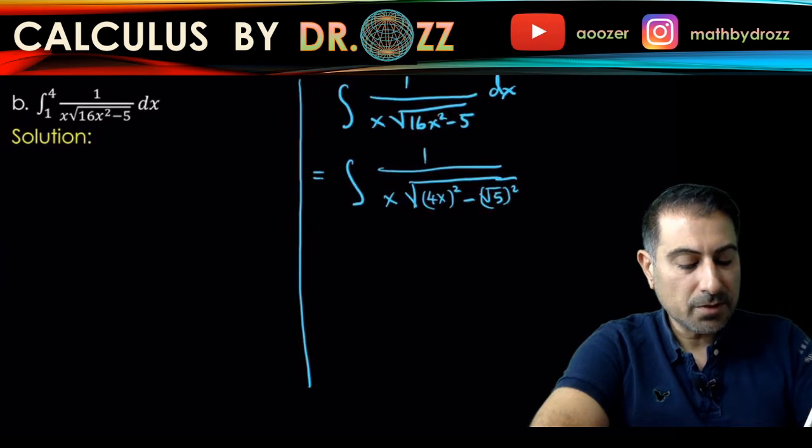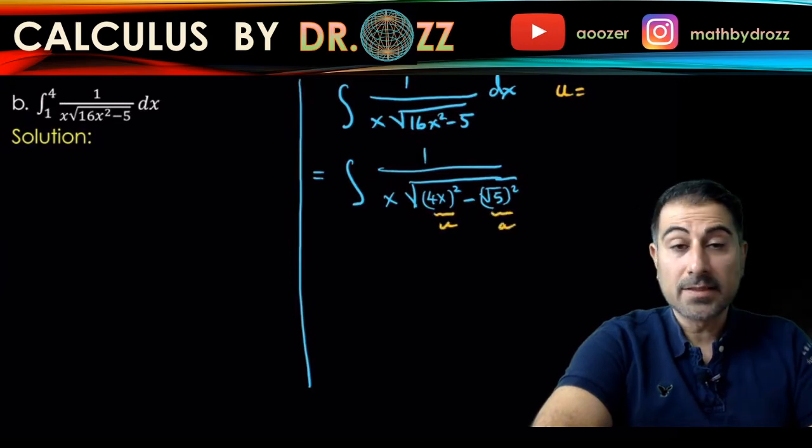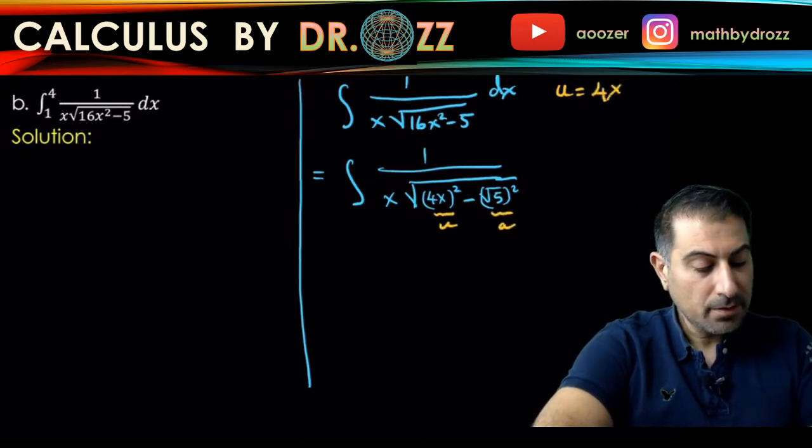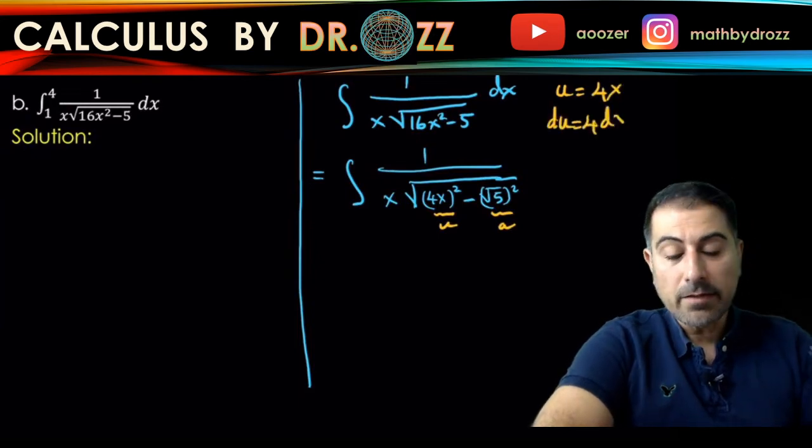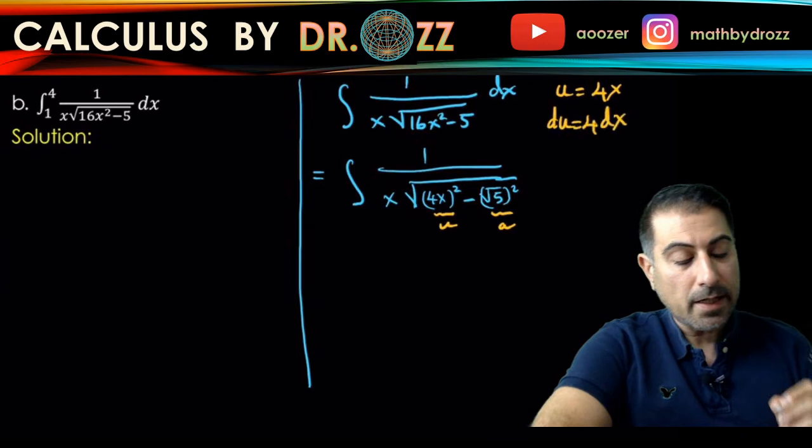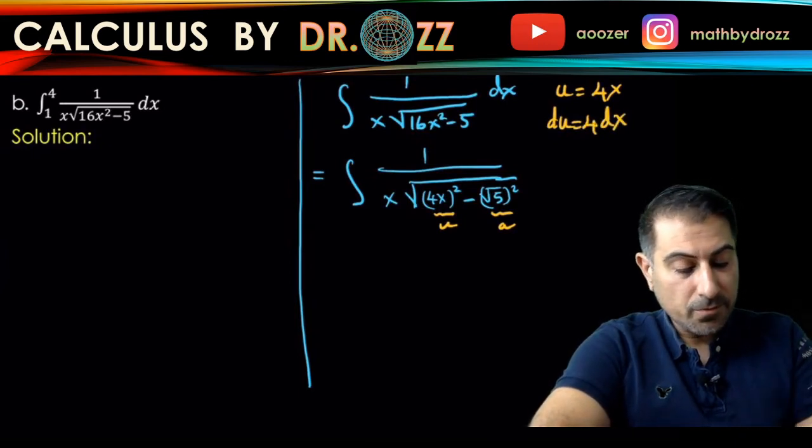And I'm going to go ahead and use the substitution because this is going to be our u and then this is going to be our a, right? So I'm going to use a substitution u equals 4x and see what happens. So du equals 4 dx. So now let's replace this integral by the u version of that.